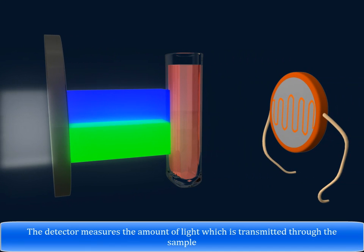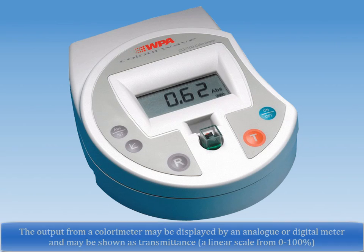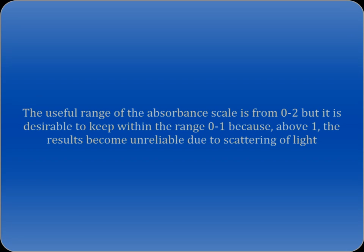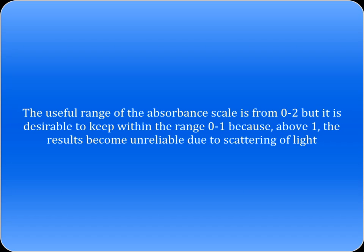The detector measures the amount of light which is transmitted through the sample. The output from a colorimeter may be displayed by an analog or digital meter and may be shown as transmittance, i.e. a linear scale from 0 to 100%. The useful range of the absorbance scale is from 0 to 2, but it is desirable to keep within the range 0 to 1, because above 1, the results become unreliable due to scattering of light.